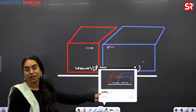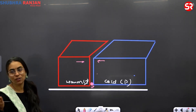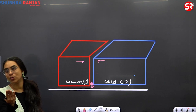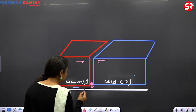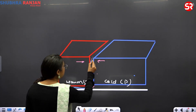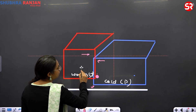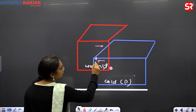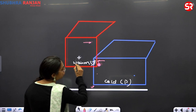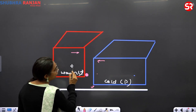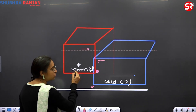The warm air mass will start rising, because it is the tendency of warm air to rise. As the warm air mass starts rising, it leads to rainfall.